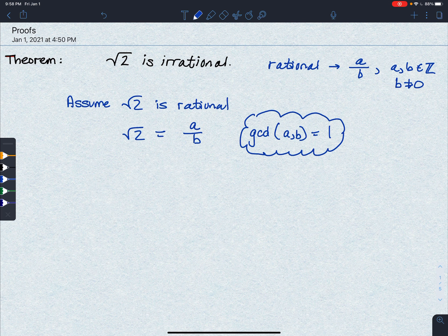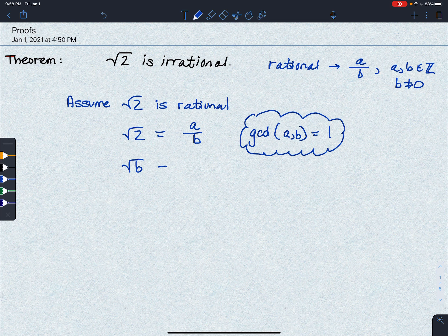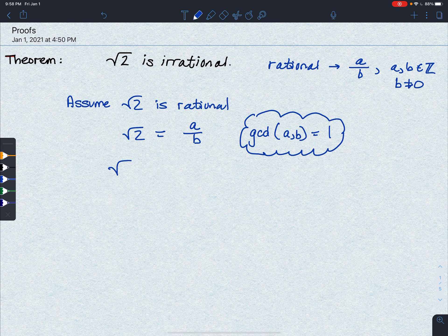So where do we go from here? Well, I'm going to multiply both sides by b, because that just seems like a good thing to do. So we have the square root of 2 times b is equal to a.